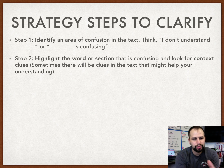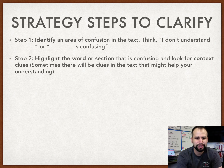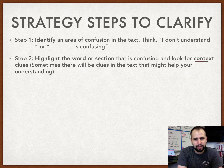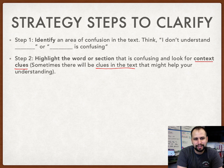Step two: you want to highlight the word, section, or phrase — the part of the text that's confusing to you — and try to see if you can find a context clue. You may have heard of context clues before, but there are clues in the text that might help you understand.